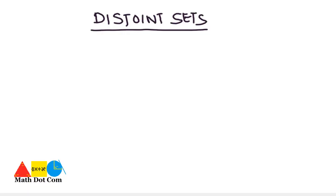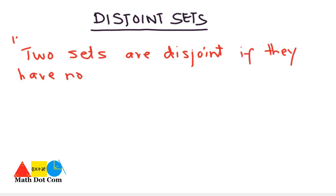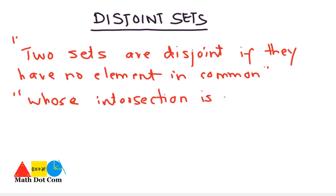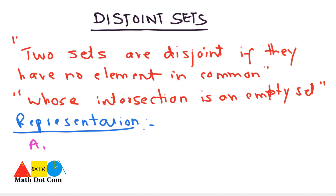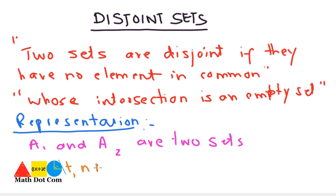Today we will learn about disjoint sets. Two sets are disjoint if they have no element in common, or we can also state it as: disjoint sets are those sets whose intersection is an empty set. Mathematically, if A1 and A2 are two sets and A1 intersection A2 equals an empty set, then the sets are disjoint.